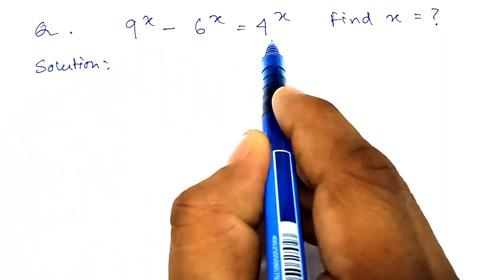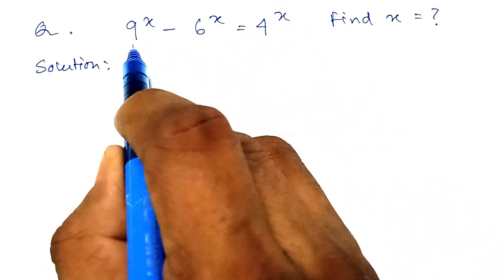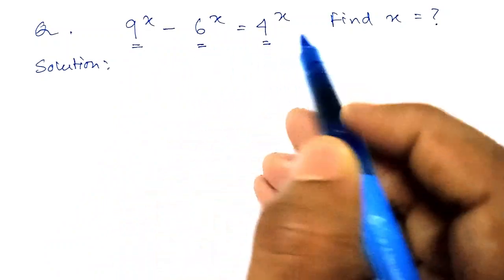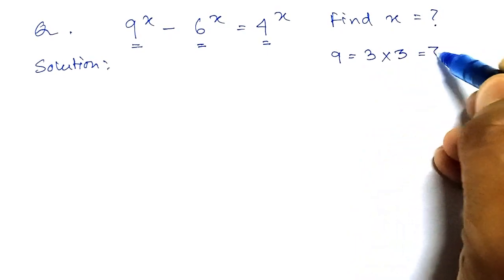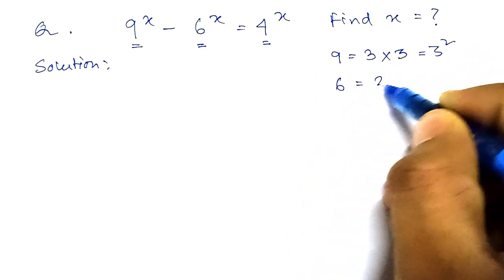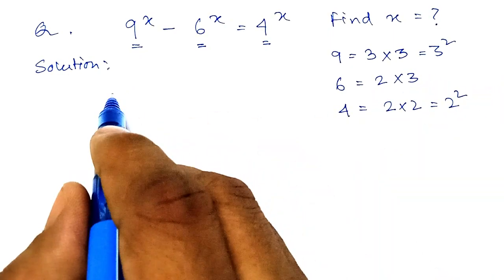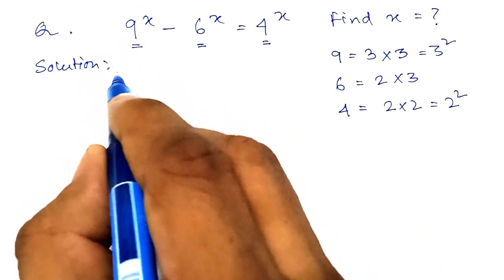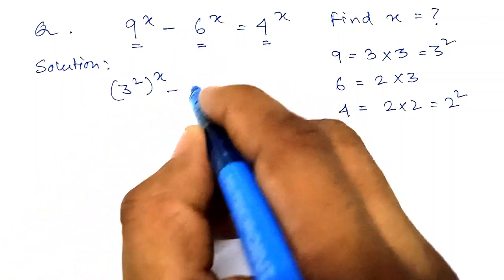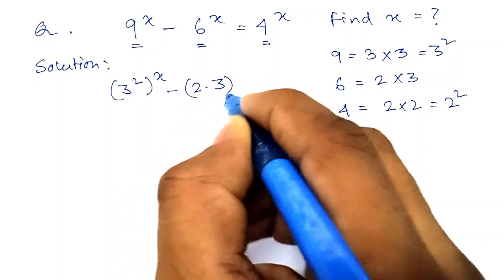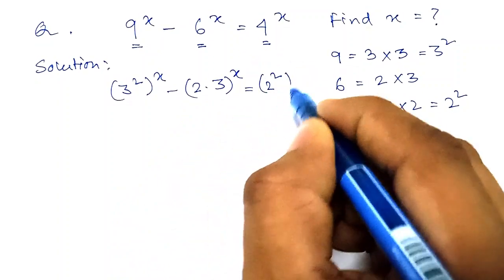Whenever you encounter such an expression, begin by finding the factors of the constant values — that is 9, 6, and 4. We can find that 9 is equal to 3 squared, 6 is equal to 2 into 3, and 4 is equal to 2 squared. So we can write: (3²)^x minus (2 into 3)^x equals (2²)^x.